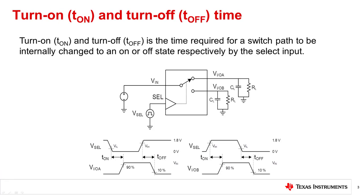Let's start with T-ON. This characteristic may also be called T-Switch or T-Enable in different datasheets. T-ON is the time required for the switch path to be charged to the ON state. For this example switch, the T-ON time for VIOA and B are measured from the time the select line reaches the logic low or high threshold to the time VIOA or B reaches 90% of its expected high state voltage.